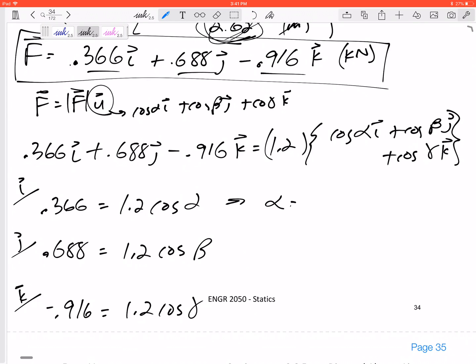So from this I would get alpha is 72.2 degrees, I would get beta is 55 degrees, and I would get gamma is 140 degrees.